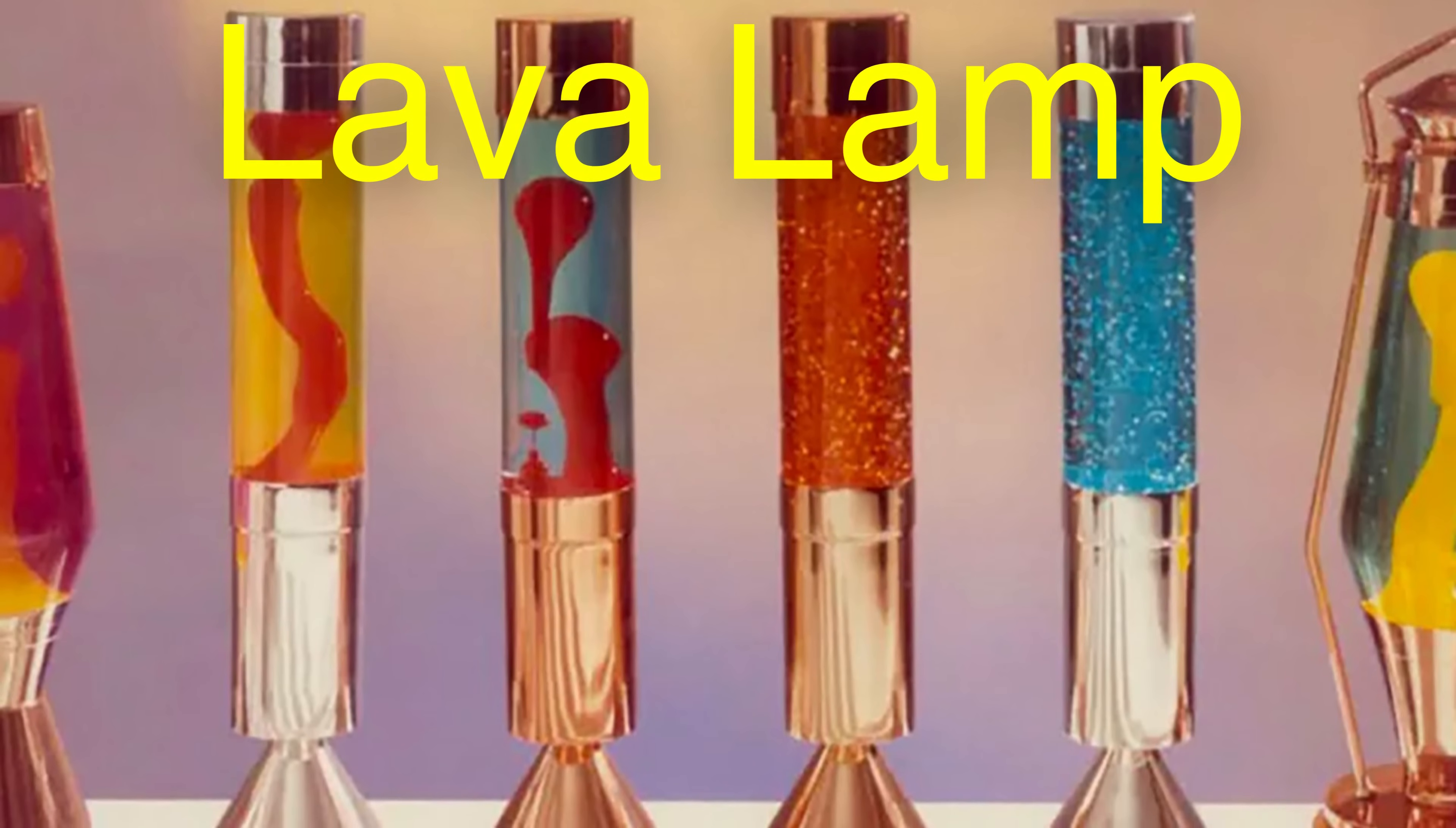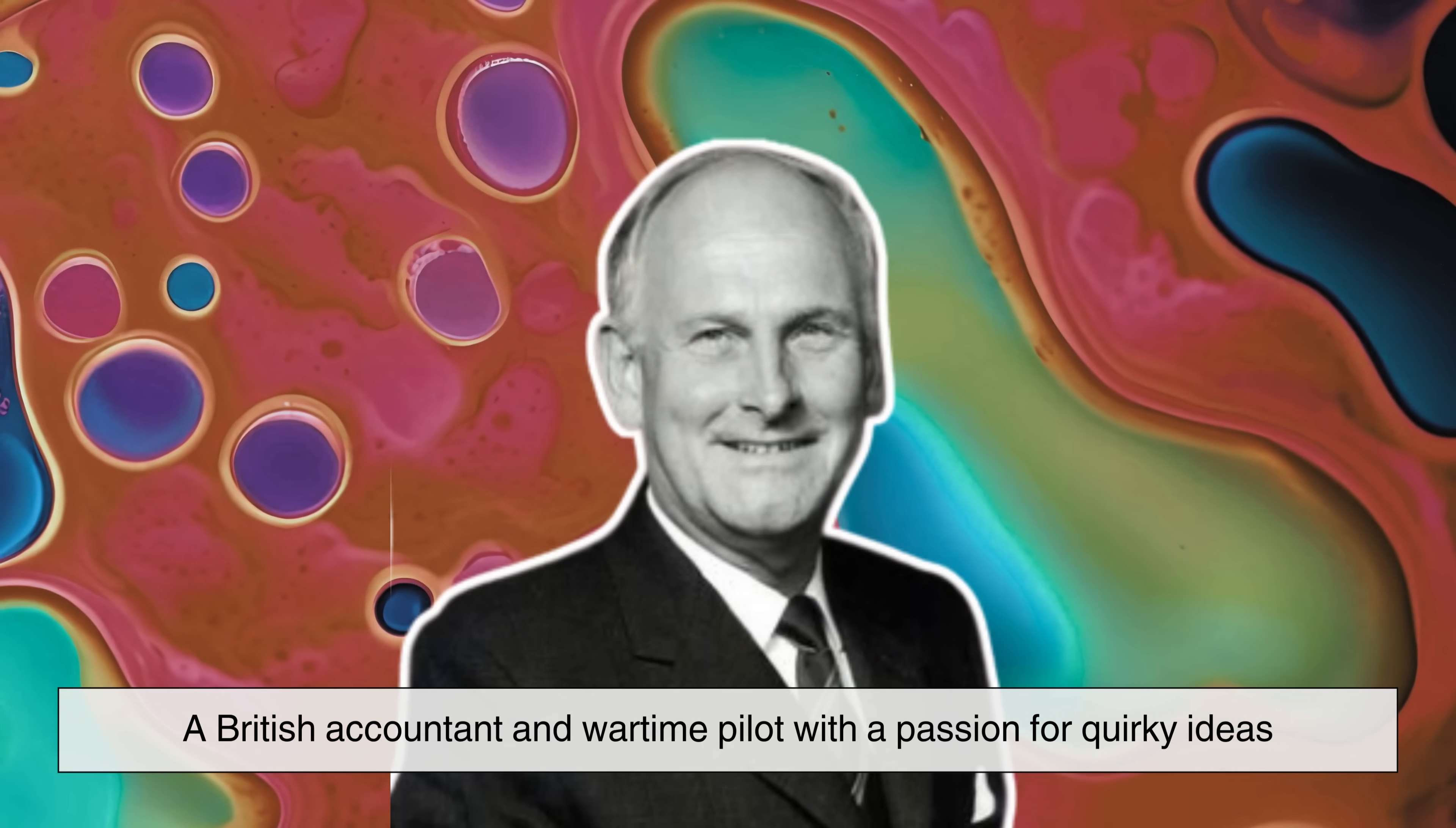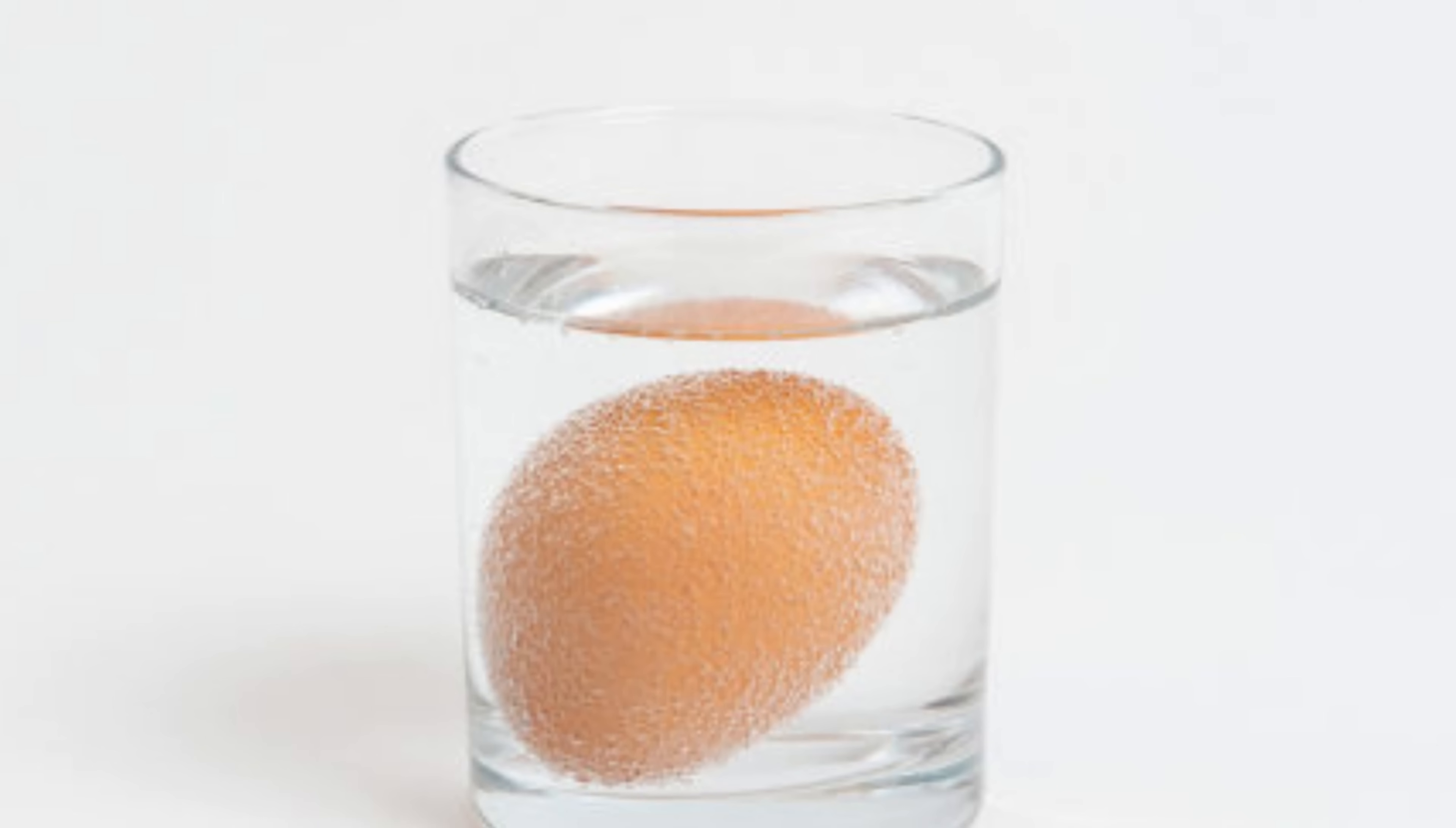The lava lamp's origin story begins in the early 1960s with an unlikely inventor, Edward Craven Walker, a British accountant and wartime pilot with a passion for quirky ideas. While visiting a countryside pub, he spotted a curious homemade device sitting behind the bar, a glass egg timer filled with liquid and blobs that moved when placed near heat. This peculiar object sparked his imagination. He saw more than a timer. He saw potential.